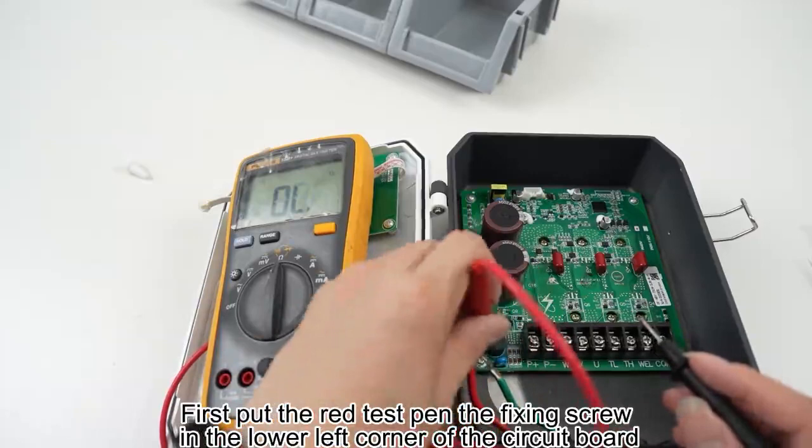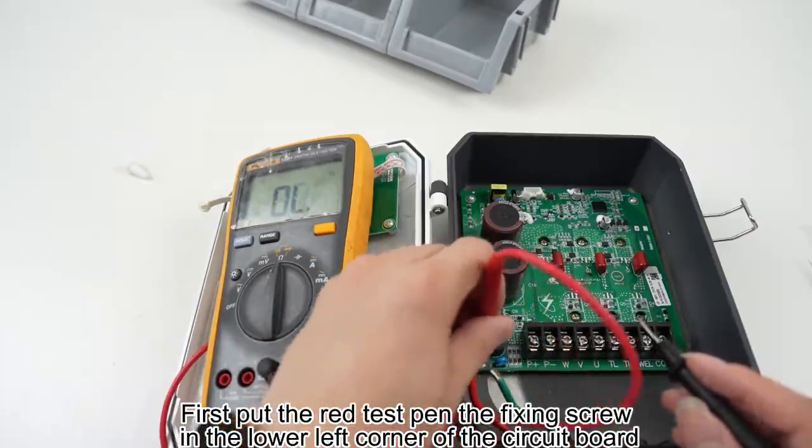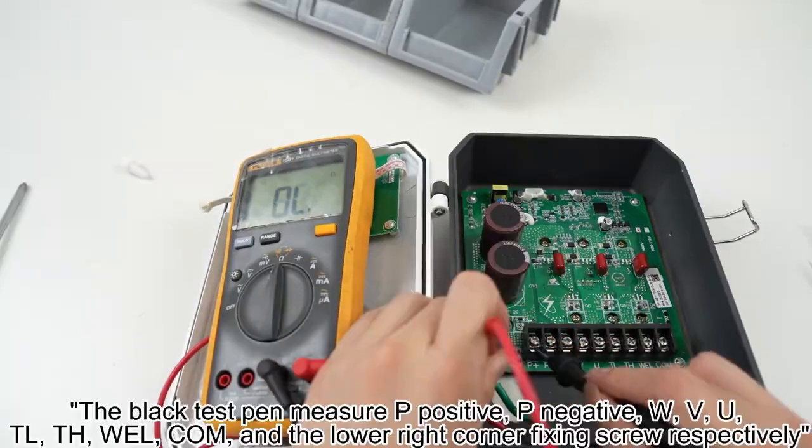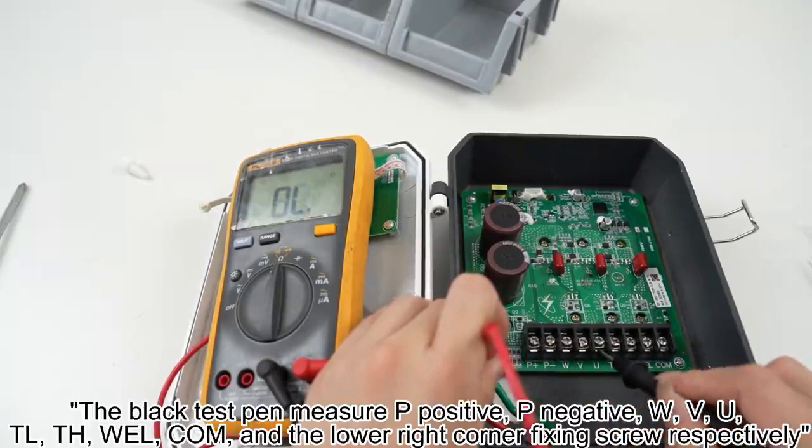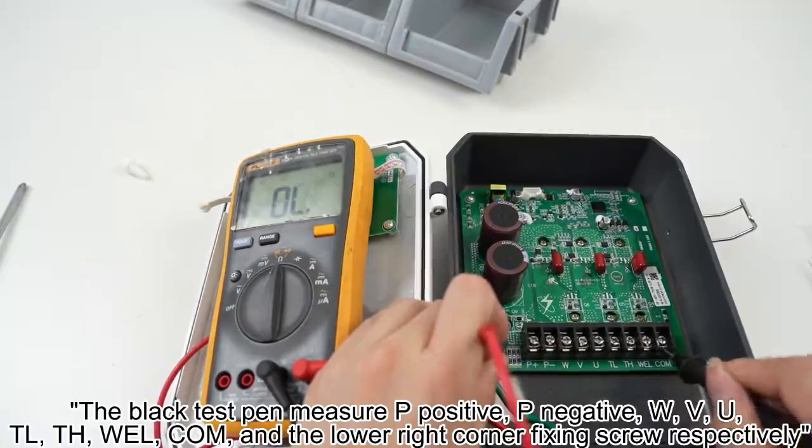First, put the red test pen on the fixing screw in the lower left corner of the circuit board. Use the black test pen to measure P positive, P negative, W, V, U, TL, DH, WELL, COM, and the lower right corner fixing screw respectively.